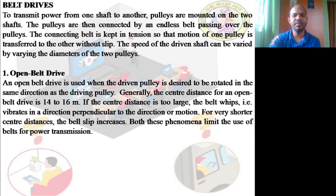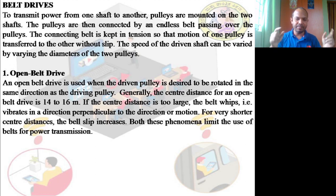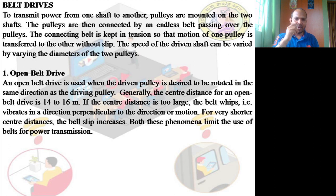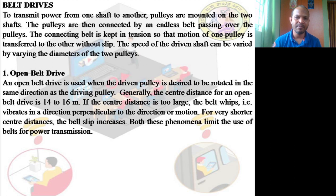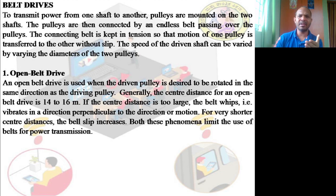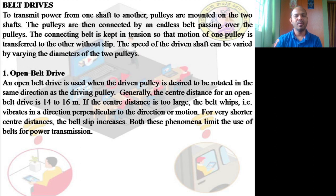Now let us move to belt drives. A belt is nothing but a loop of flexible material — it is a continuous circular loop. It can be made of leather, cloth, threads, or other materials depending on the application. For example, floor mill belts are made of cloth, while automobile applications use good-quality leather belts.